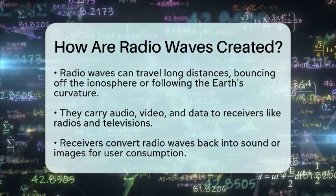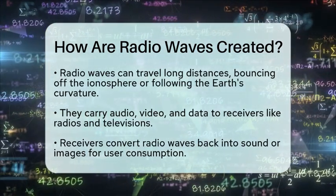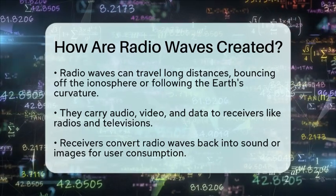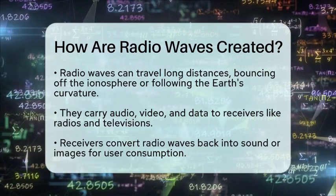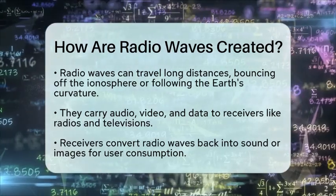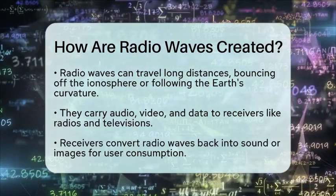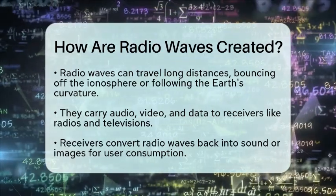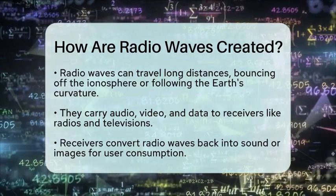In summary, radio waves are created through the movement of electric charges, which generates electromagnetic waves. These waves are transmitted through antennas and can travel vast distances, allowing for communication.